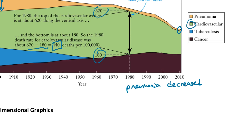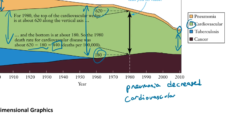For cardiovascular disease, it grew for a little while but then did go down. You can see the thickness started at a certain point, got pretty thick around the 1950s and 1960s, but now its thickness has decreased a lot. So cardiovascular disease grew and then decreased.